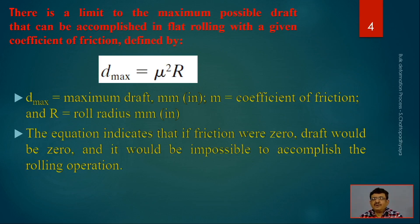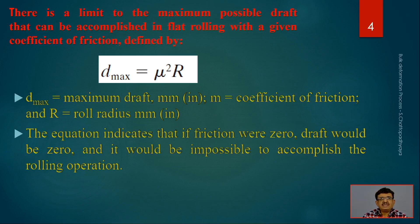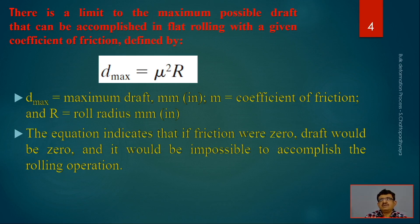There is a limit to the maximum possible draft that can be accomplished in flat rolling with a given coefficient of friction. This limit is defined by the equation: d_max = μ²·R, where μ is the coefficient of friction and R is the roll radius. This determines the maximum reduction possible. We need to know both the roll radius and the coefficient of friction to determine the maximum draft.